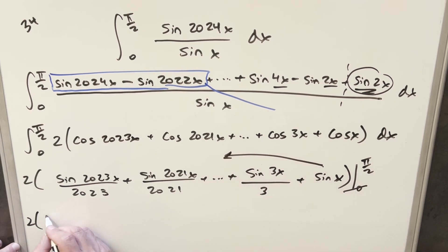So first, sine π/2. That's going to be a 1. Then here, sine 3π/2. That's going to be minus 1 over 3. So we have minus 1 over 3 there. Then when we do like sine 5x.